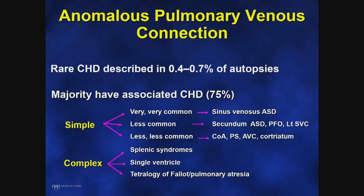Anomalous pulmonary venous connections are rare simple congenital heart defects when they occur in isolation. However, in the majority of patients, they can be associated with more congenital heart disease, and these could be atrial septal defect, especially sinus venosus atrial septal defect, or it could be more complex disease such as single ventricle or tetralogy of Fallot.